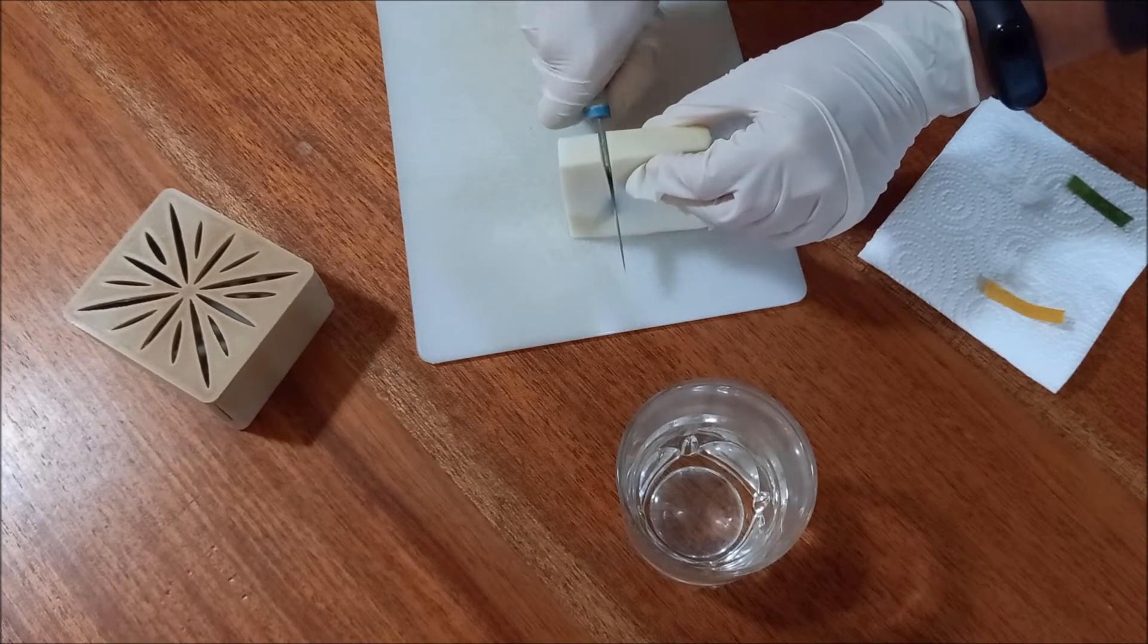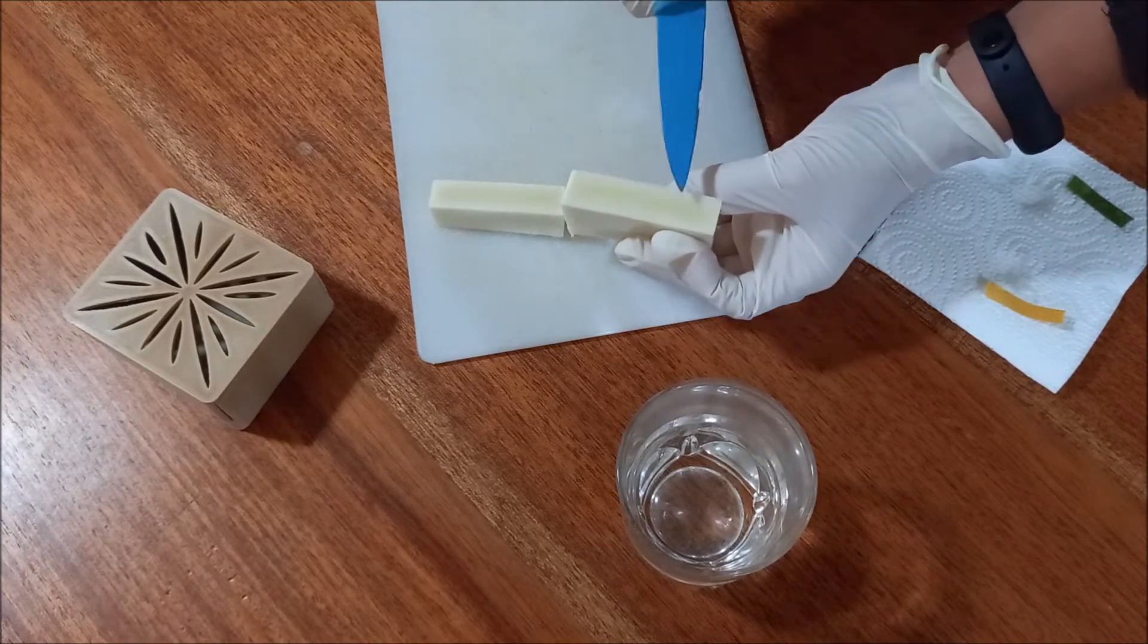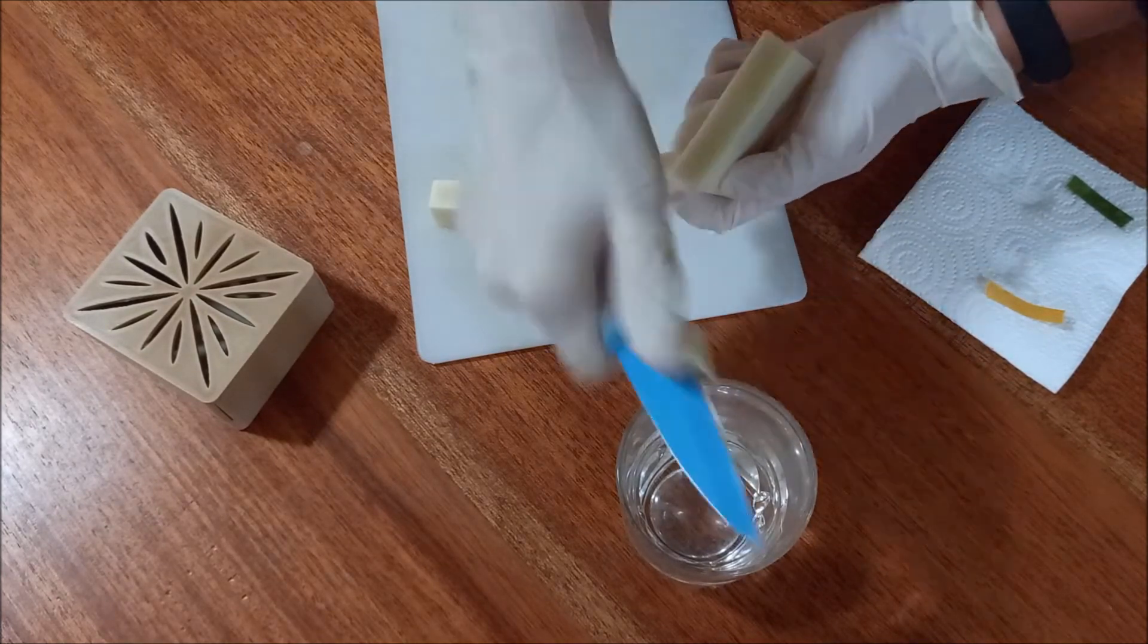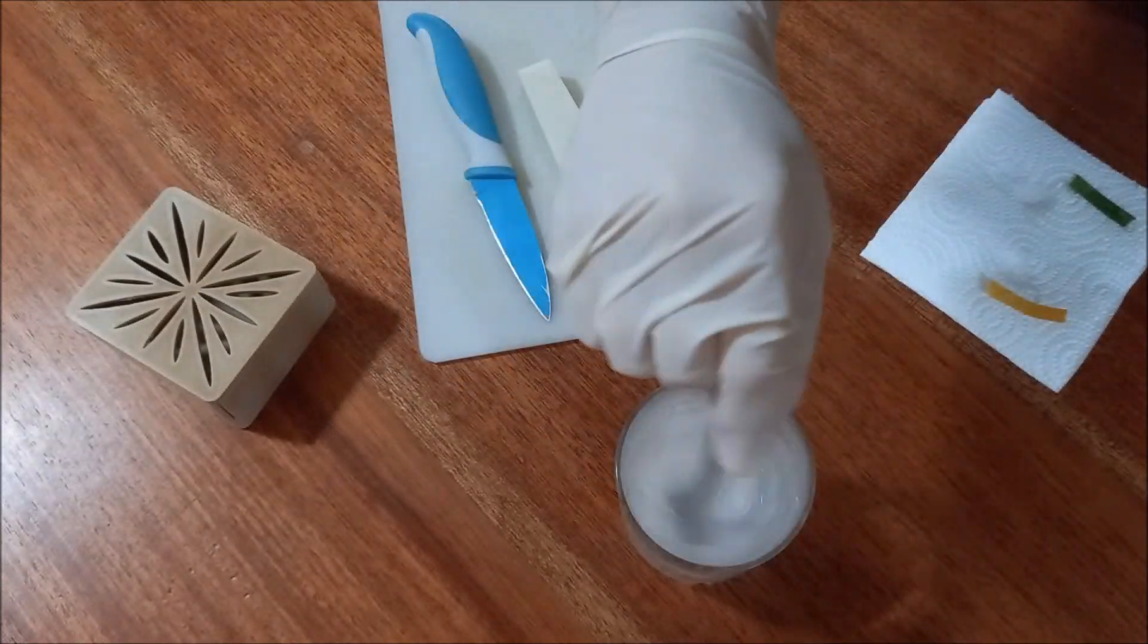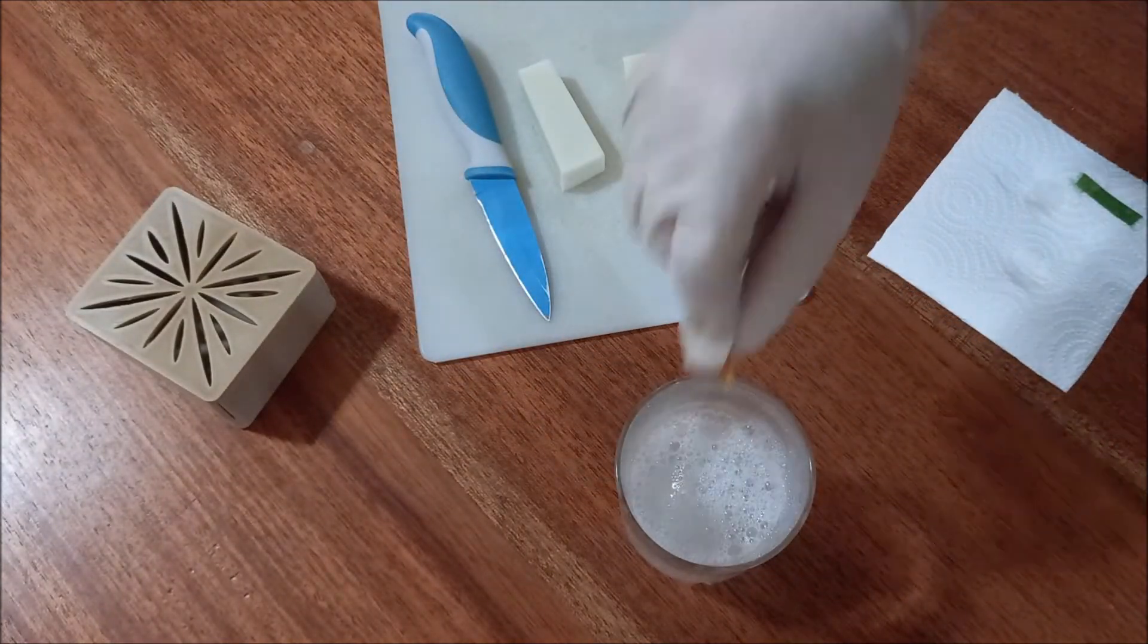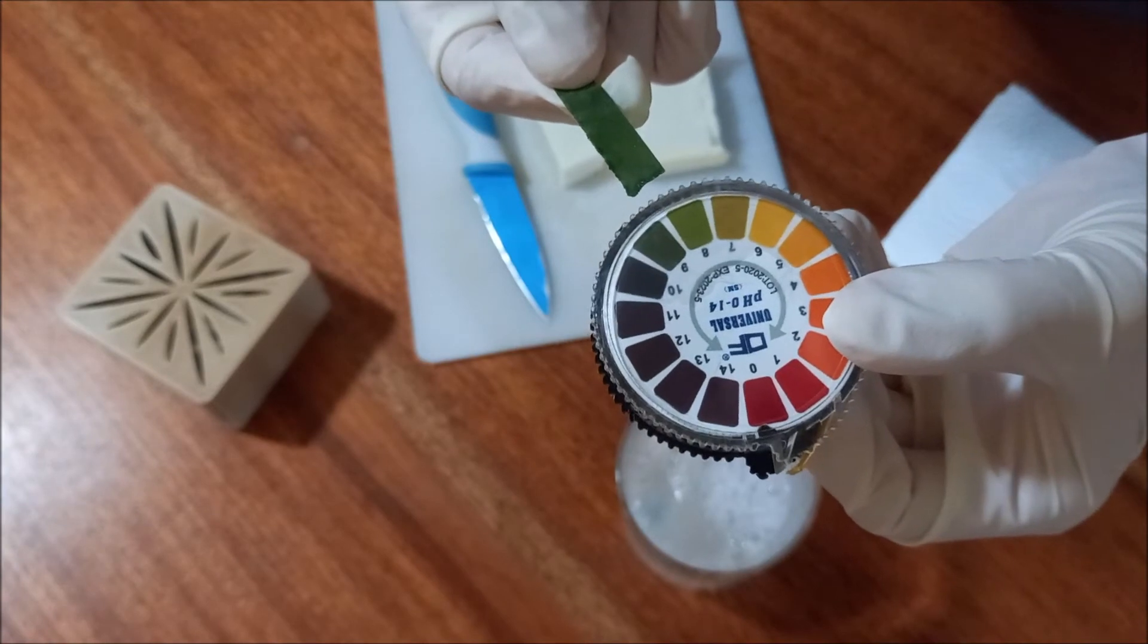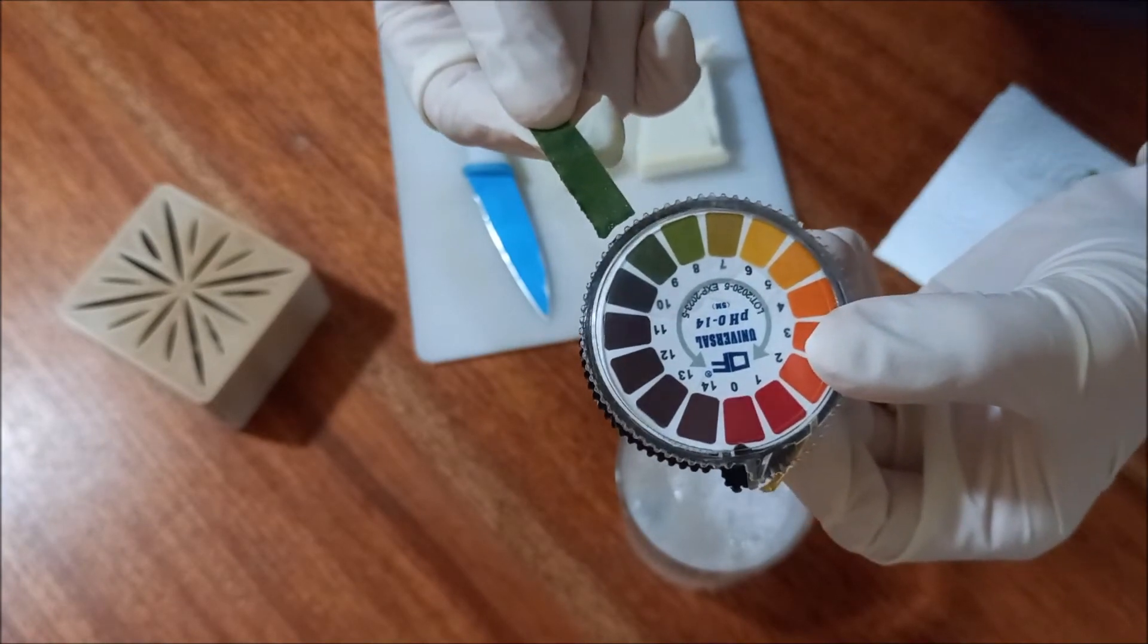The first method is to cut the soap and remove a bit of the middle part, then dissolve the pieces in hot water. Place the strip in the water and test. This soap is at pH 9, which means it can be safely used on the skin.